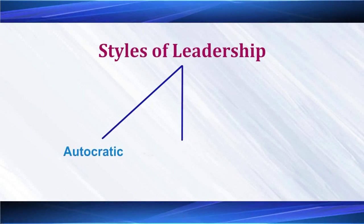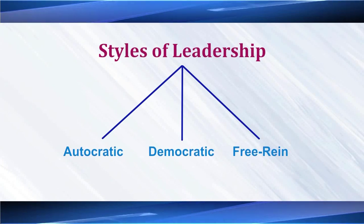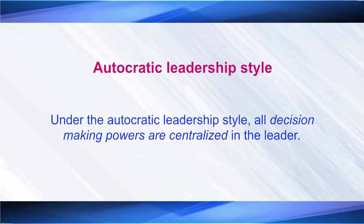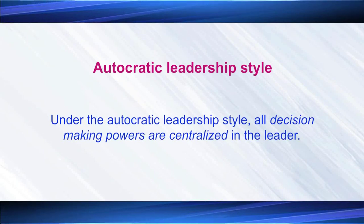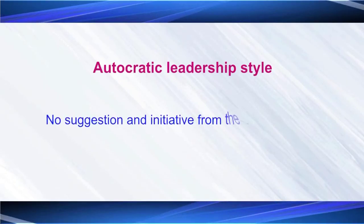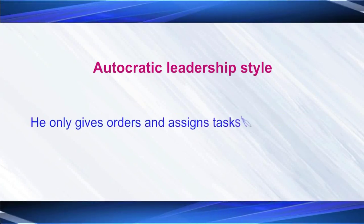In any organization, leadership qualities can be possessed in specific ways and the manager performs the role of a leader. Generally, we have three different styles of leadership: autocratic style, democratic style, and free-reign style. Under the autocratic style of leadership, all decision-making powers are centralized under the leader, who takes decisions by themselves. There is no initiative from the subordinates; the leader only orders them to perform the task. This type of leadership arises in cases of emergency, such as in military services.